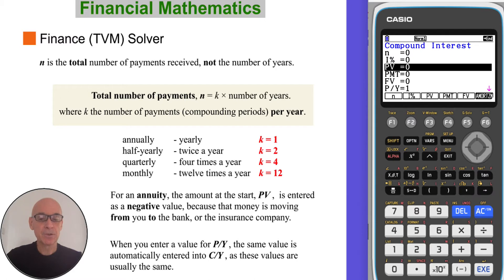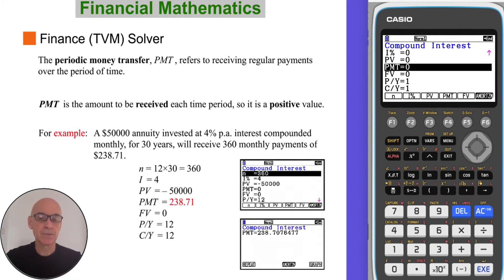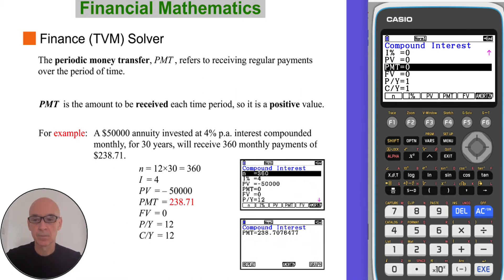When you enter a value for P/Y, the number of payments received per year, the same value is automatically entered into C/Y, the number of compounding periods per year, as these values are usually the same. The periodic money transfer PMT refers to receiving regular payments over the period of time. PMT is the amount received each time period, so it is entered as a positive value in the calculator.